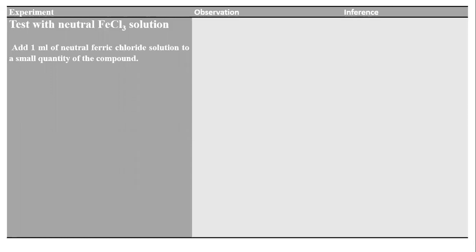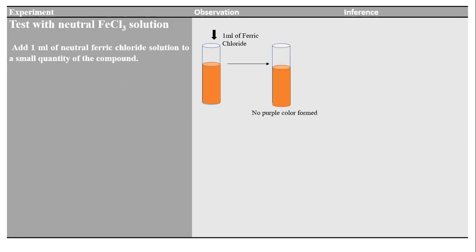We will also perform the neutral ferric chloride solution test. We take the sample and add 1 mL of ferric chloride solution. If we get a purple color, it shows the presence of phenol; otherwise it is absent.